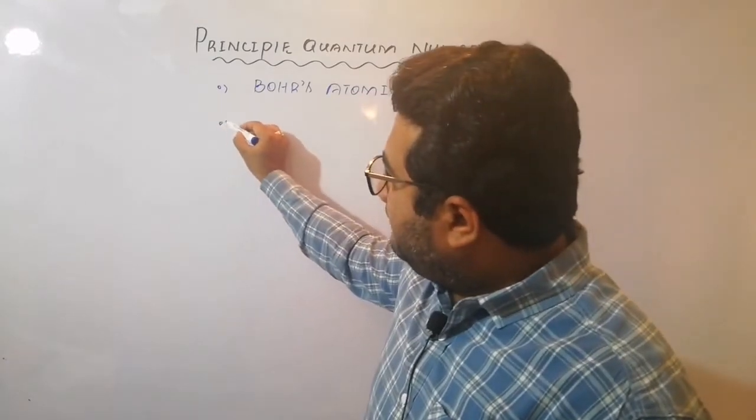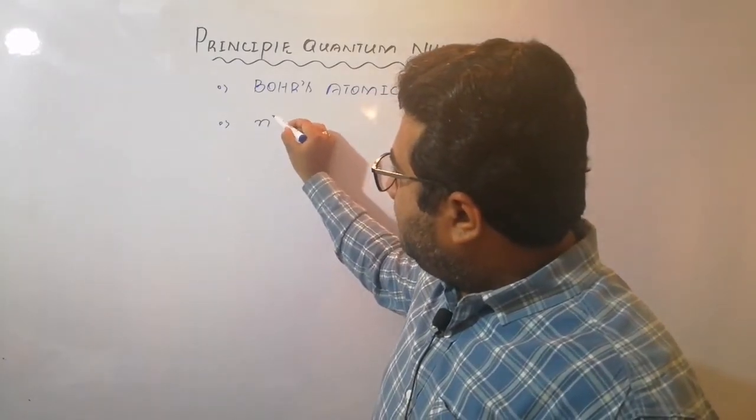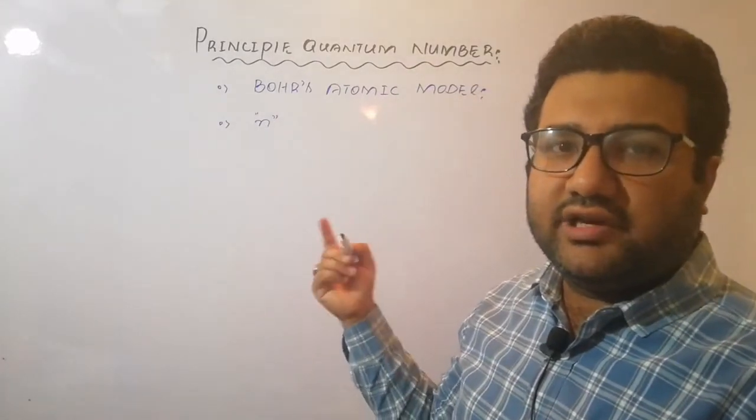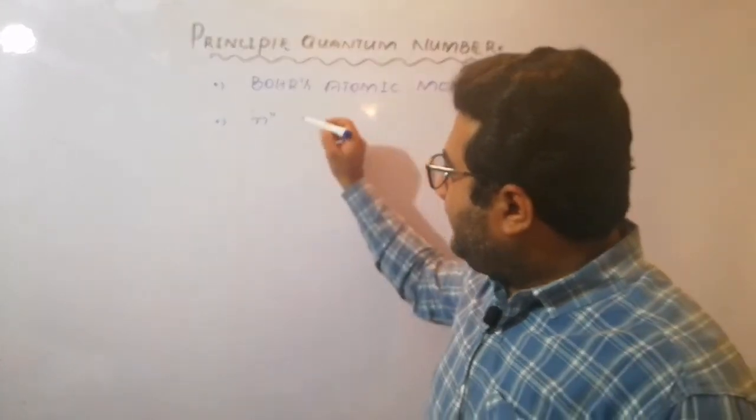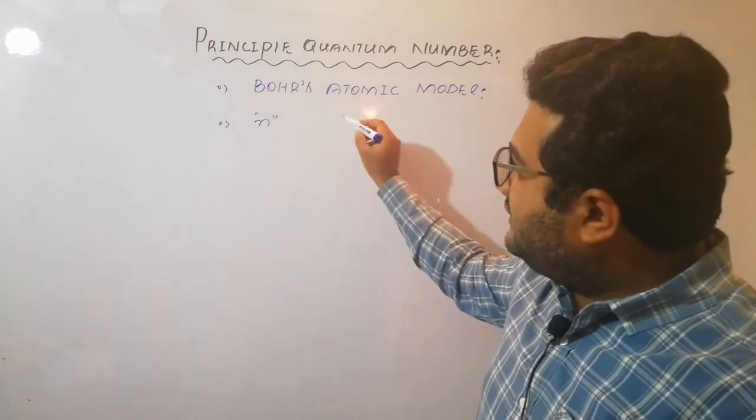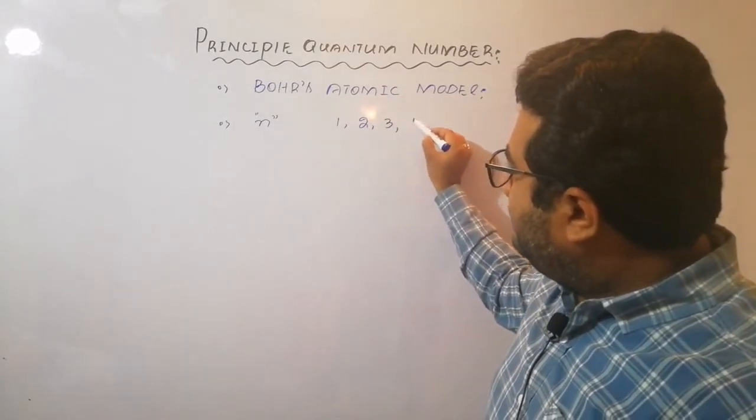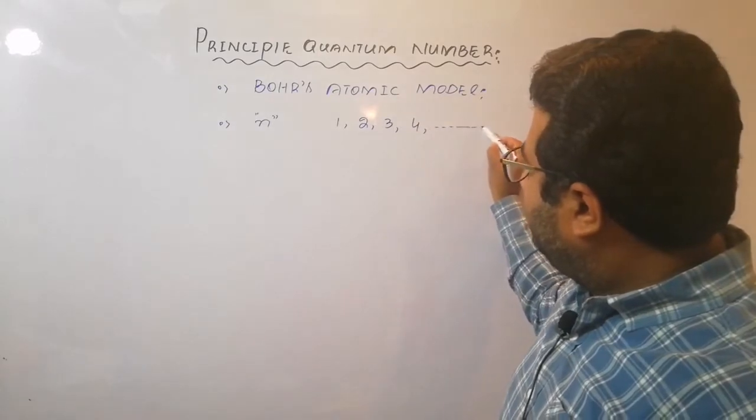The symbol of principle quantum number is n, which is written in lowercase. What can be the values of this principle quantum number? 1, 2, 3, 4, and so on.